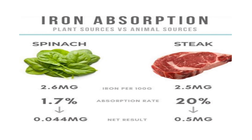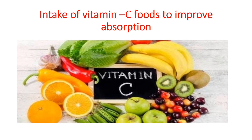Now we will see the iron absorption between plant sources and animal sources. For example, spinach contains 2.6 mg and steak contains 2.5 mg of iron respectively. But absorption from animal sources is 20%, giving an end result of 0.5 mg. In plant sources it is only 1.7% absorption, giving a result of 0.04 mg, which indicates that animal sources are absorbed better than plant sources. Intake of vitamin C foods helps iron absorption, so it is always advisable to take citrus fruits after an iron intake.